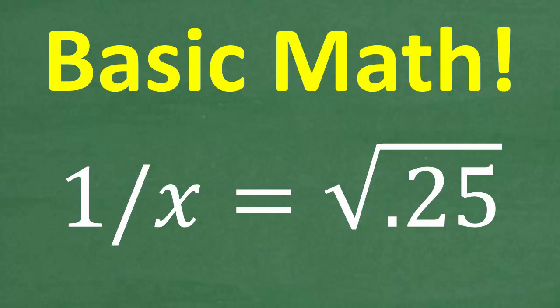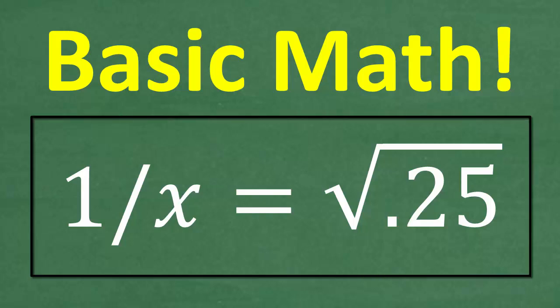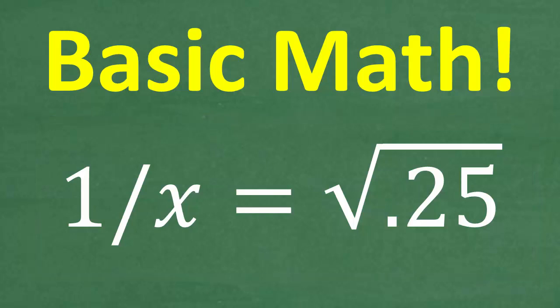So we have a basic algebra equation. The equation is 1 over x is equal to the square root of 0.25. But the secret here to solve this equation without the aid of a calculator is something you learn before algebra.